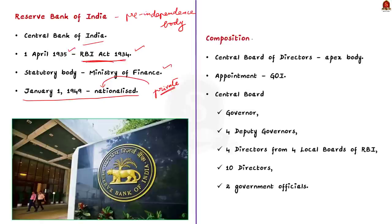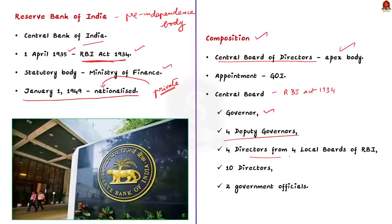Now let's talk about its composition. The affairs of the RBI are managed by the Central Board of Directors, which is the apex body in the Reserve Bank's organizational structure. The Central Board is appointed by the government under the provisions of the Reserve Bank of India Act 1934. It consists of the governor, four deputy governors, four directors nominated from four local boards, ten directors nominated by the Central Government, and two government officials nominated by the Central Government. The governor is the chief executive of the Reserve Bank of India.